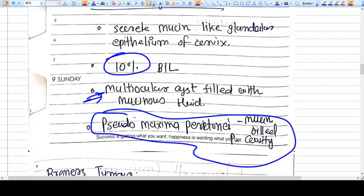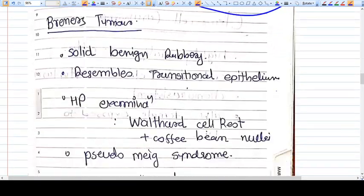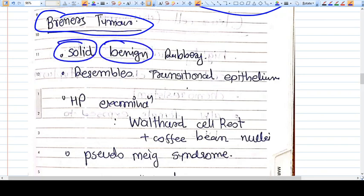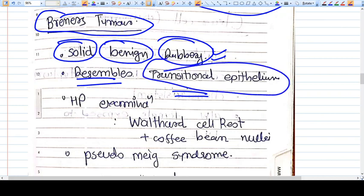Now what is Brenner tumor? Serous cystadenoma, dermoid cyst, and mucinous cystadenoma were cystic tumors. Now comes Brenner tumor, which is a solid benign rubbery tumor. So far we've discussed benign tumors. The epithelium resembles transitional epithelium seen in the urinary tract.